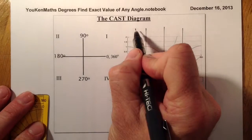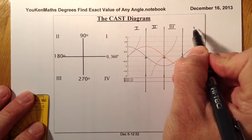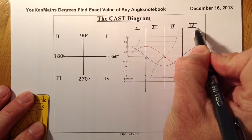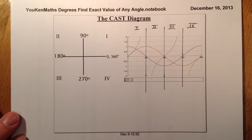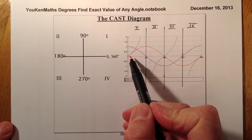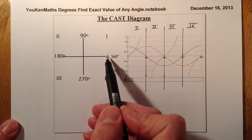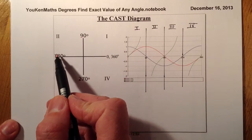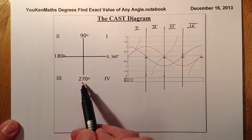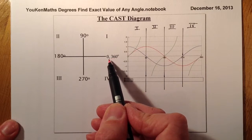There are the quadrants: quadrant one, quadrant two, quadrant three, and quadrant four. The CAST diagram represents a circle going from zero, round to 90, to 180 degrees, 270 degrees, 360 degrees — which is back to the start again, back to zero.